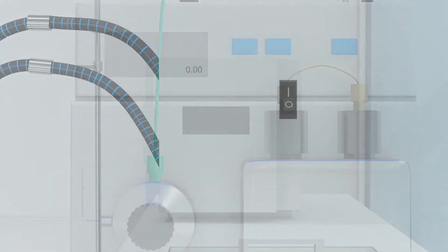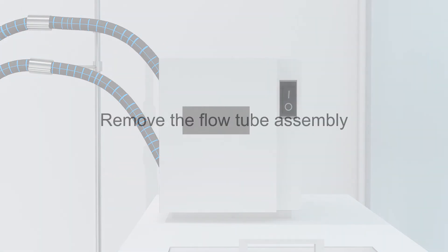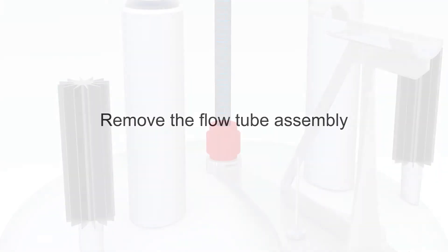Then set the thermostat to ambient temperature. Wait until the temperature is reached and switch the thermostat OFF. This part shows how to remove the flow tube assembly from the magnet.